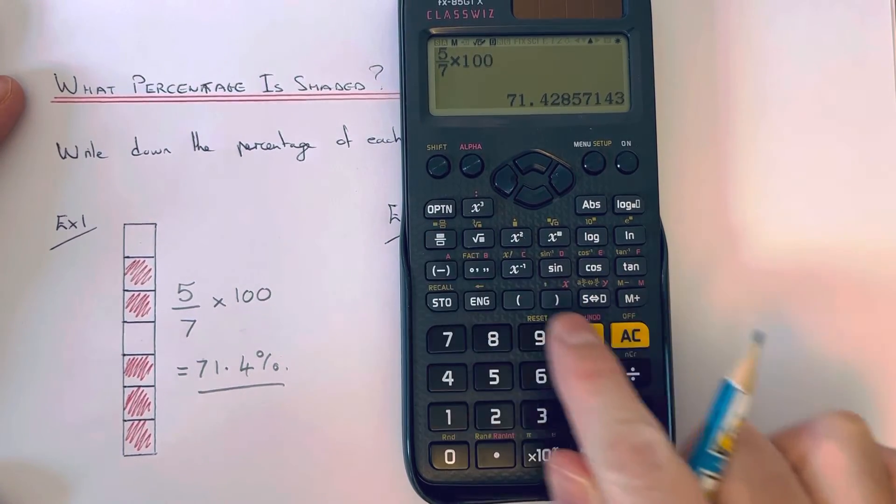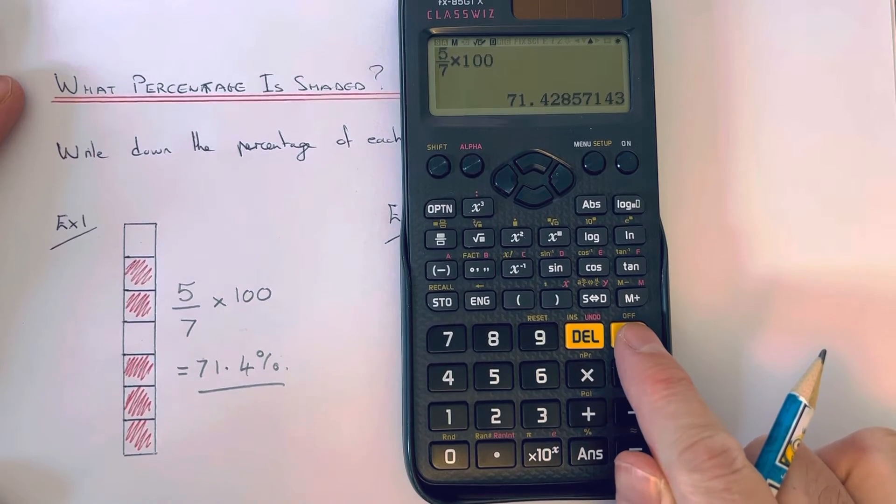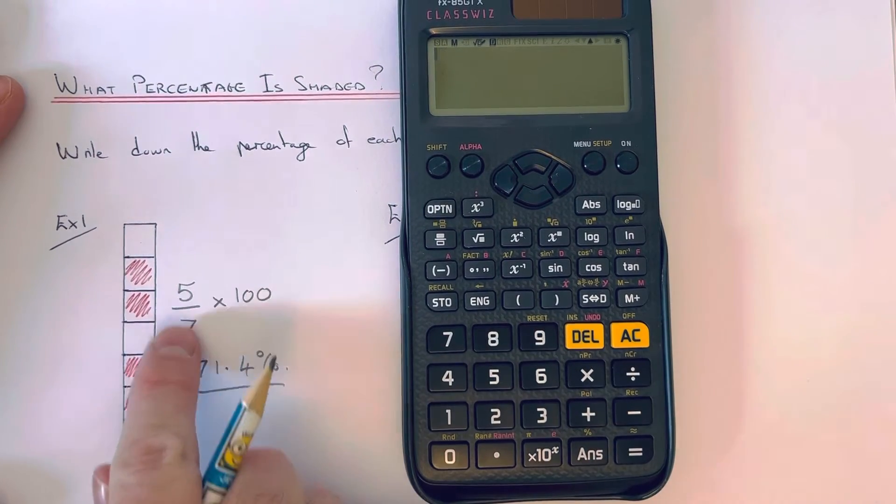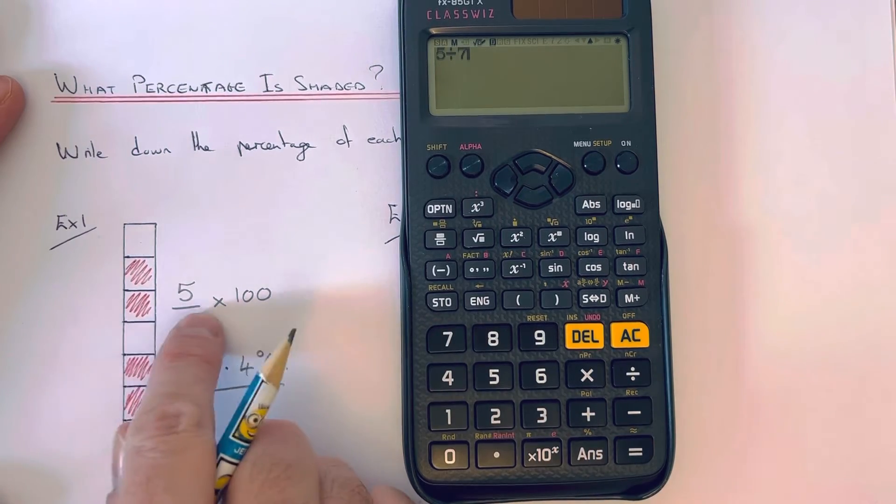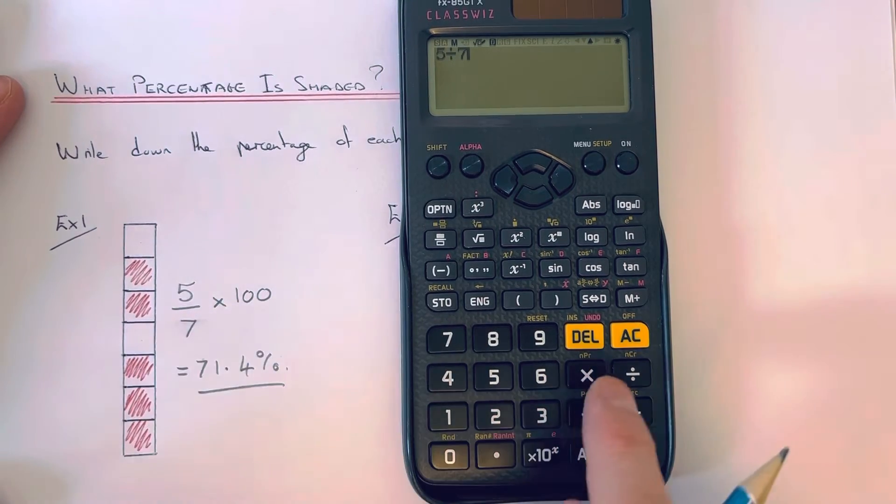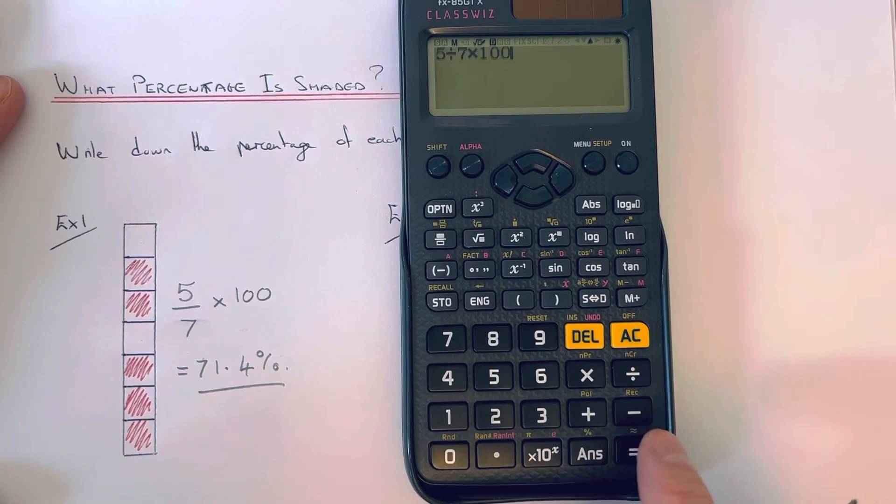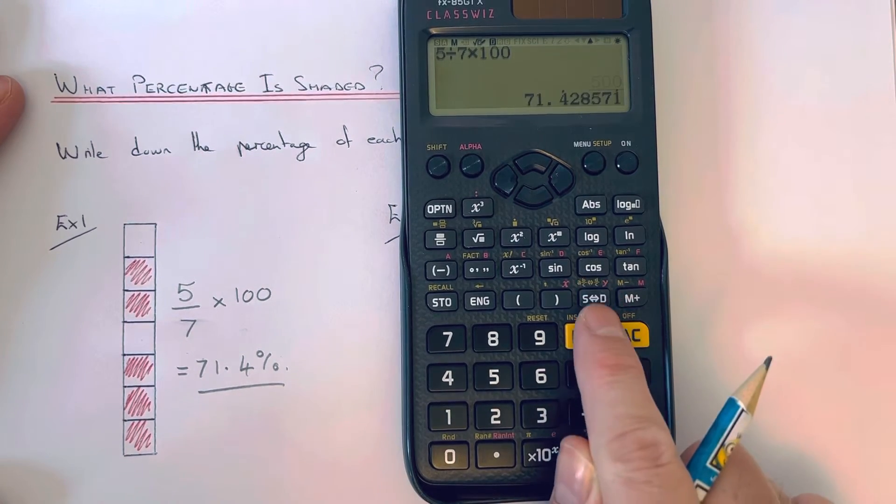If you don't have the fraction key in your calculator, instead of typing in the fraction, you can type in 5 divided by 7, because the line in the middle means divide, and then times that by 100, and you will get the same answer.